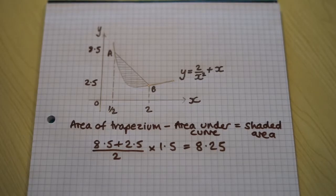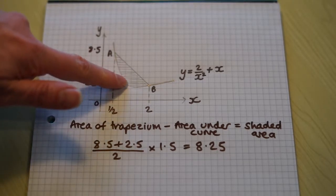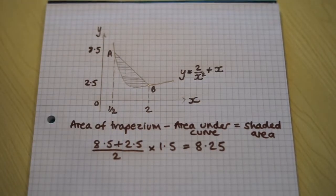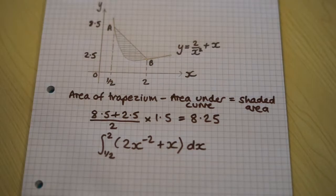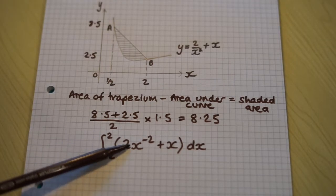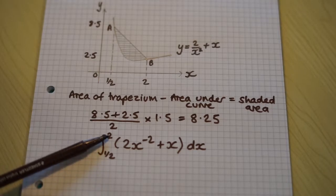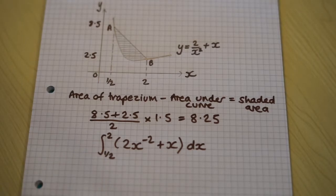Now, next part of the plan, we need to find the area between the curve and the x-axis using integration. Here it is written out mathematically. We're integrating that with respect to x between the values 2 and a half. Let's do that.